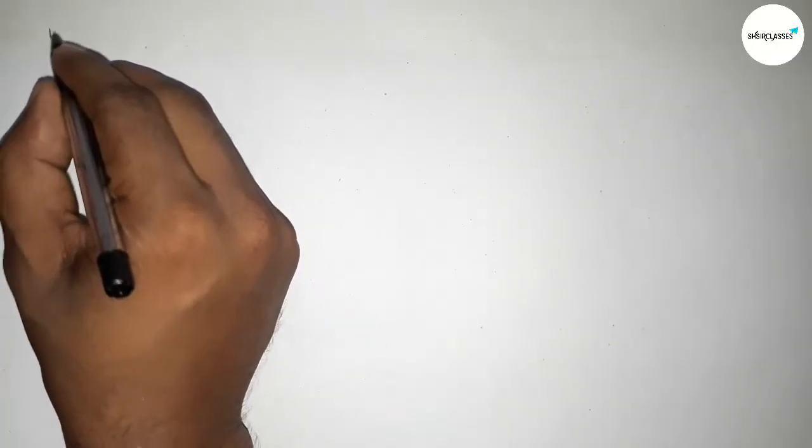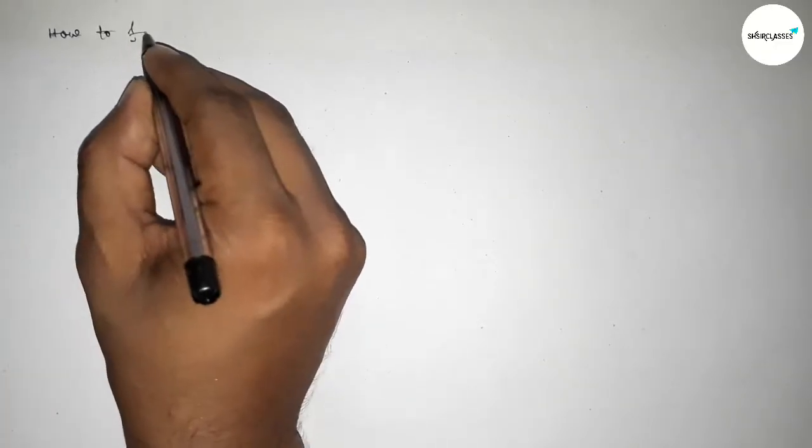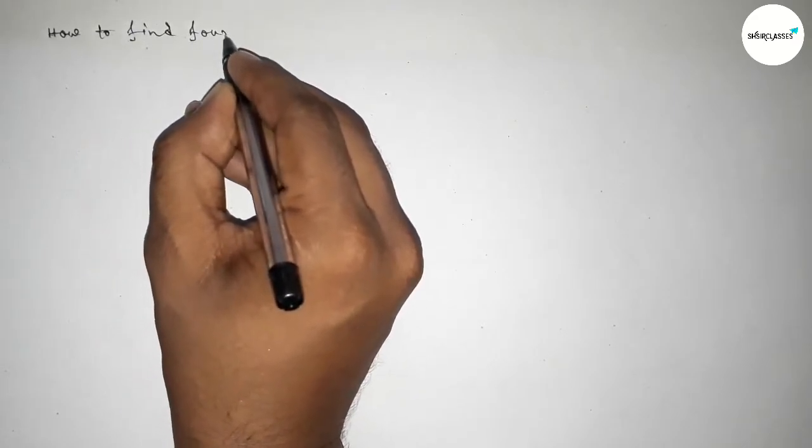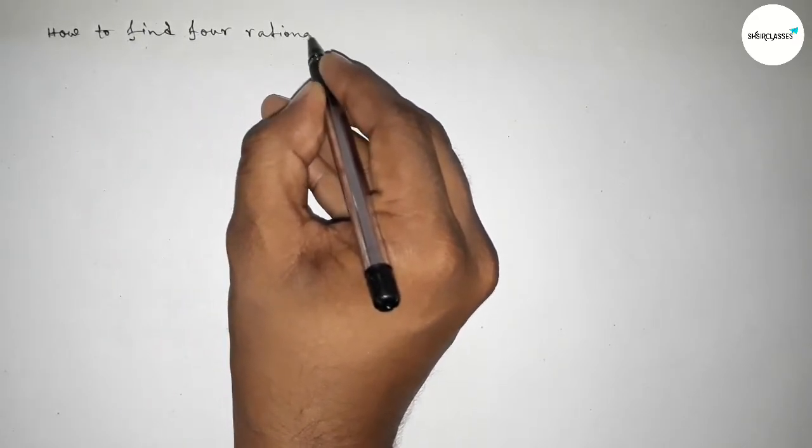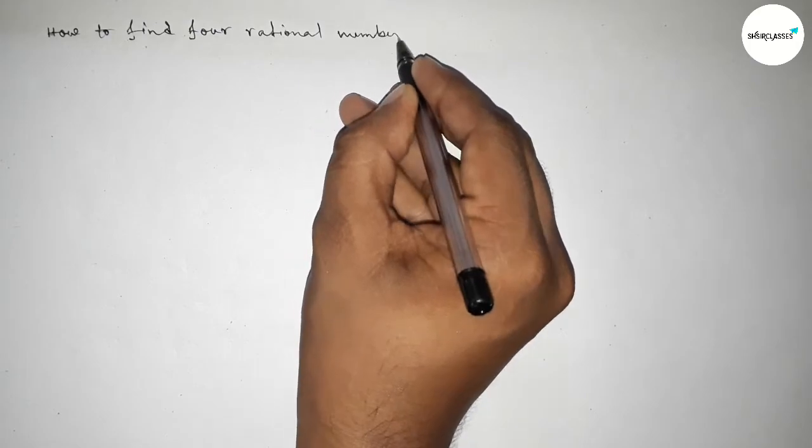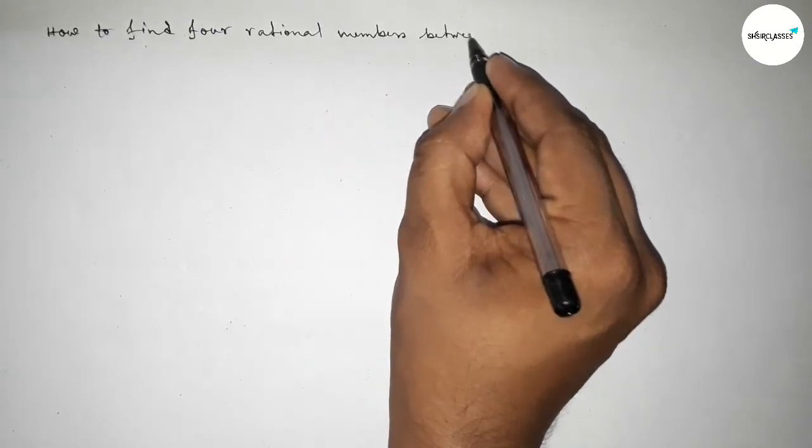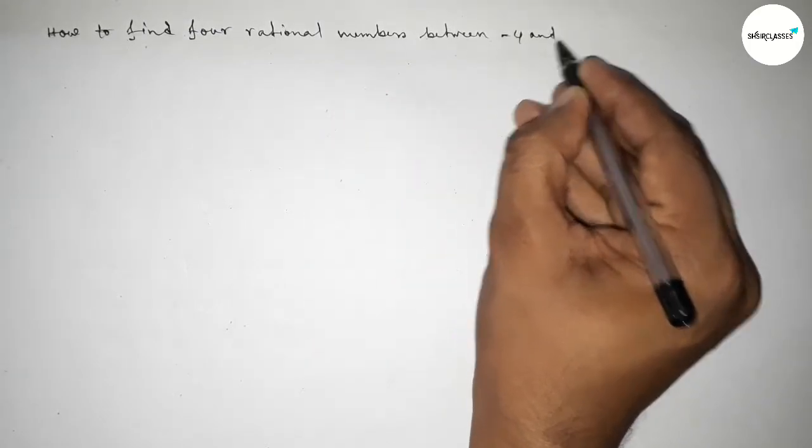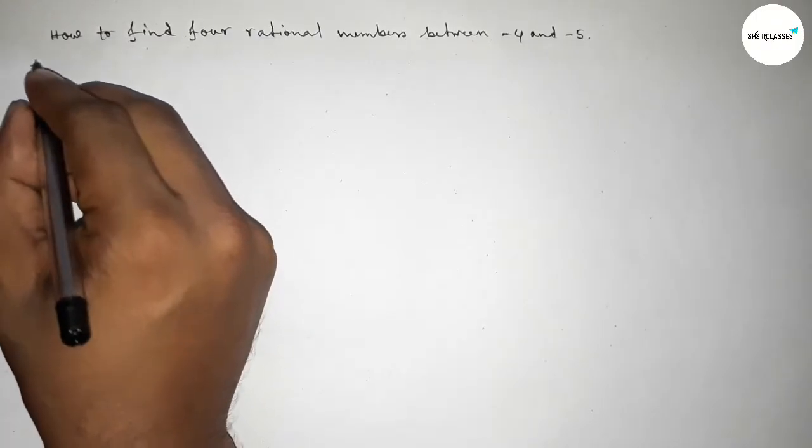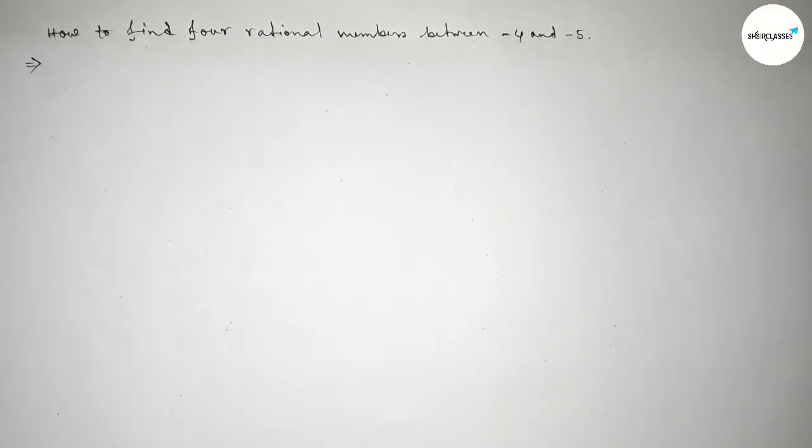Hi everyone, welcome to essay share classes. Today in this video we have to find four rational numbers between minus four and minus five. So let's start the video. First of all, let's solve this problem. So here given the two numbers minus four and minus five.